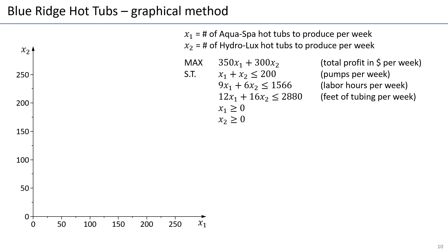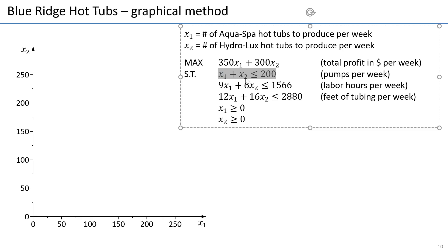So, which values of x1 and x2 can I plug in here so that these inequalities are all satisfied? The second thing we would like to see is, of those points that are feasible, which one gives us the highest profit? We would like to maximize the profit. First, let's see what points satisfy the constraint x1 plus x2 less than or equal to 200. The way to approach this is to see which points give us exactly 200 pumps used, so that would be x1 plus x2 equals 200.